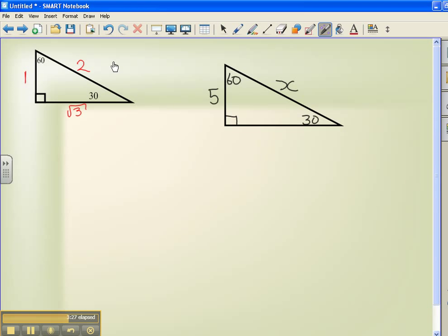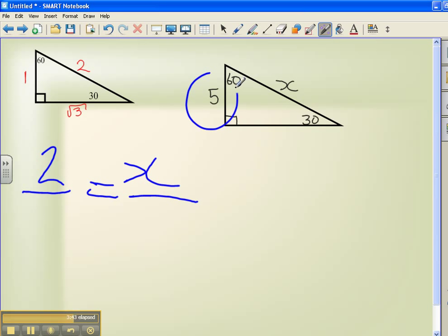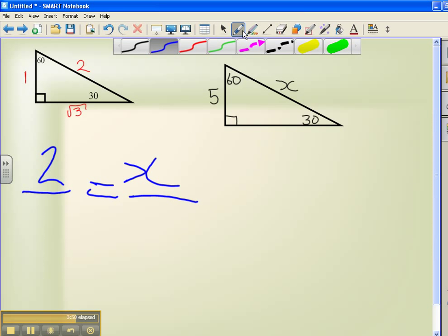So what we do is we write 2 equals x. Well, now 2 doesn't equal x yet. We're not done yet. So we're going to put the bottom half. Now, we take the side we do know. Now, we know the short leg. And it's going to be the same leg as that one right there. So we know the short leg has a length of 1. On our triangle, we know the short length has a leg of 5.